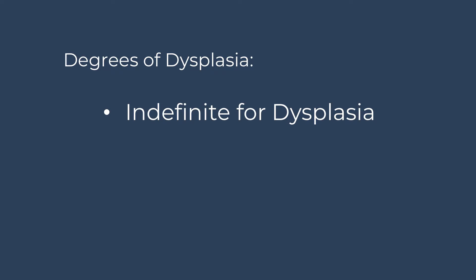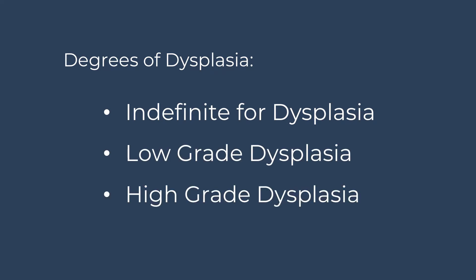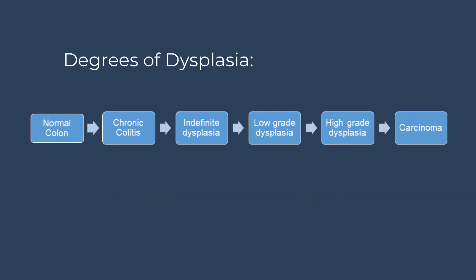Dysplasia develops when normal tissues develop atypical features. There are varying degrees of dysplasia, including indefinite for dysplasia, low-grade dysplasia, and high-grade dysplasia. High-grade dysplasia is thought to be a precursor for the development of colorectal cancer.